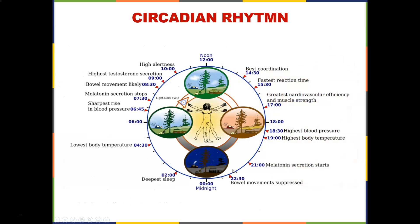Speaking of the circadian rhythm — this is also regulated by the pineal gland. Most people should be on this rhythm: the lowest body temperature is around 4:30 in the morning, the sharpest rise in blood pressure is around 6:45 — that's why most heart attacks happen in the morning — melatonin secretion stops and you wake up. Your bowel movement is likely around 8 to 8:30.